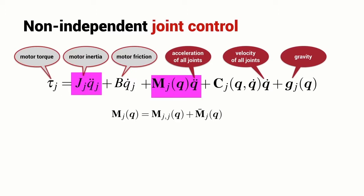You'll see that there are two terms here that involve joint acceleration. So, what I'm going to do is consider the vector M_J in two components. There is the component associated with joint J and there's the component associated with all of the other joints which I've denoted by M bar.